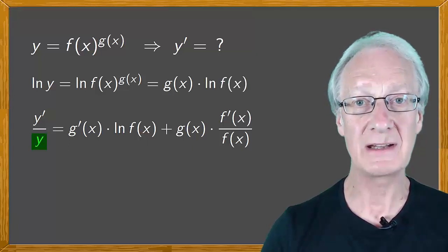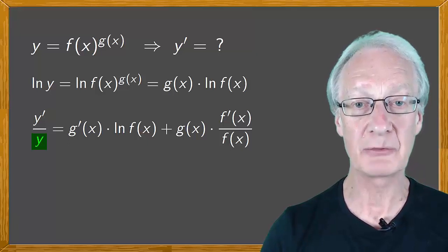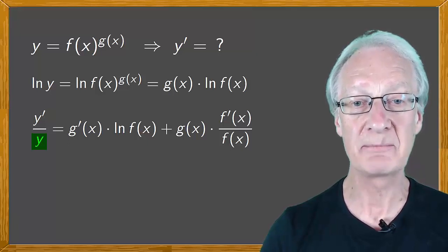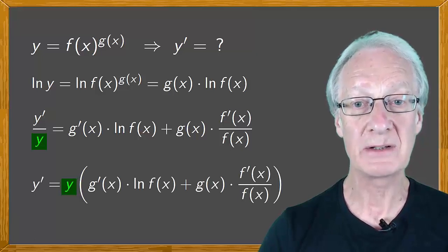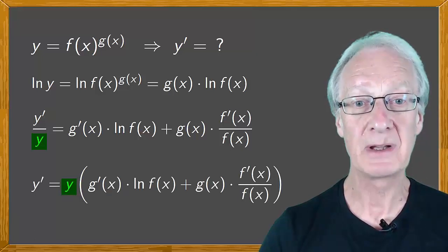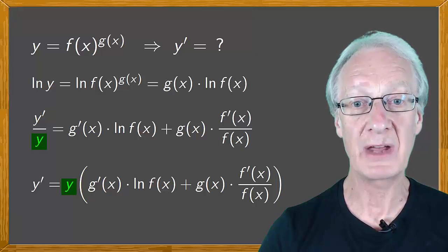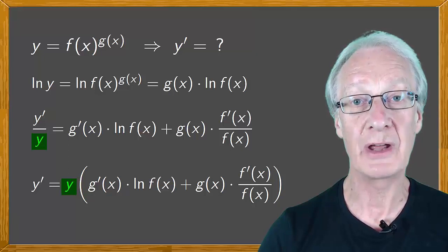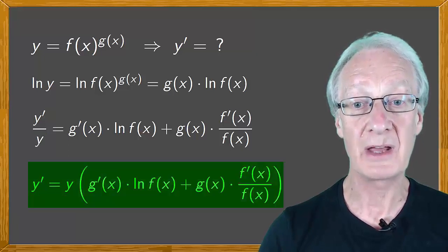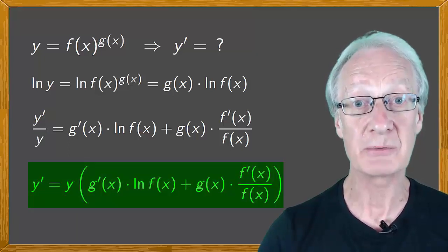Now since y is dividing the left-hand side, it multiplies when we move it to the right-hand side. And we get that y prime equals y times g prime of x times the log of f of x plus g of x times f prime of x over f of x. And there we have the derivative of y, which is what we wanted.